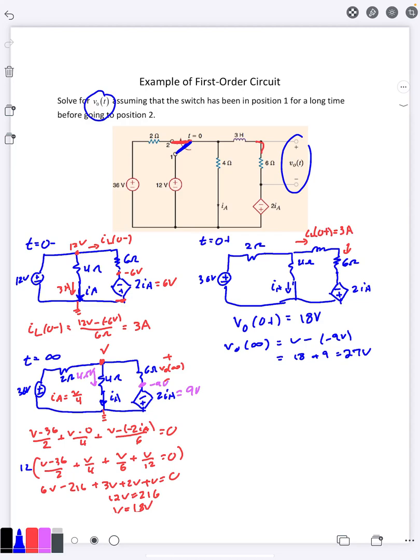The last thing we need is our time constant, which means we need our equivalent resistance, our Thevenin resistance here. Well, that's going to be a little bit of a problem because we have that dependent source. So we need to try to figure out what it's going to be. So we're looking for the Thevenin resistance based on the two nodes of the inductor there. Well, I can do a VOC and an ISC. We'll be using this circuit here to find our VOC and ISC.